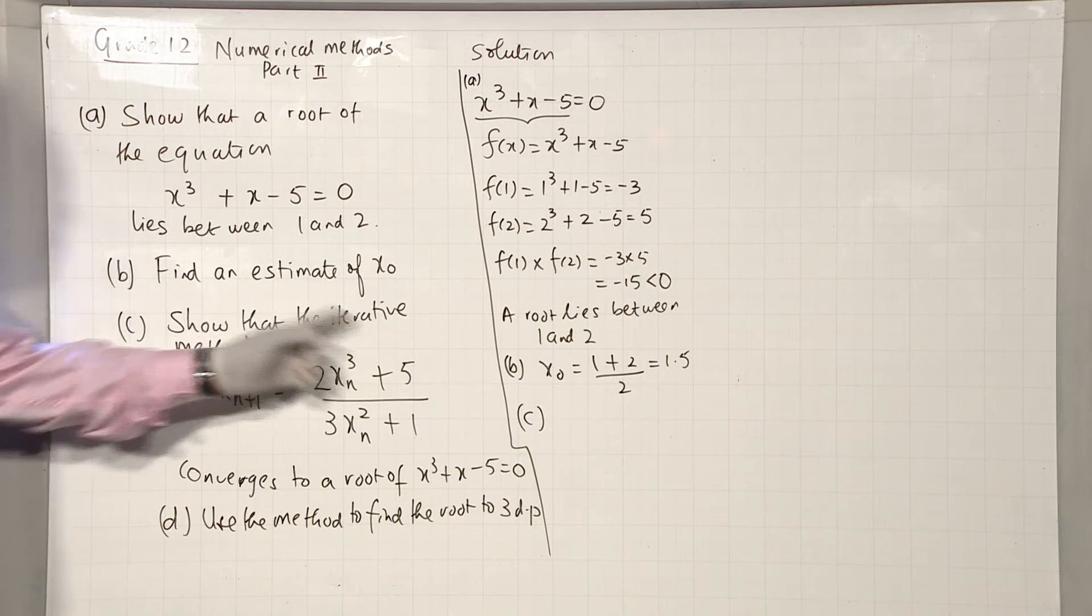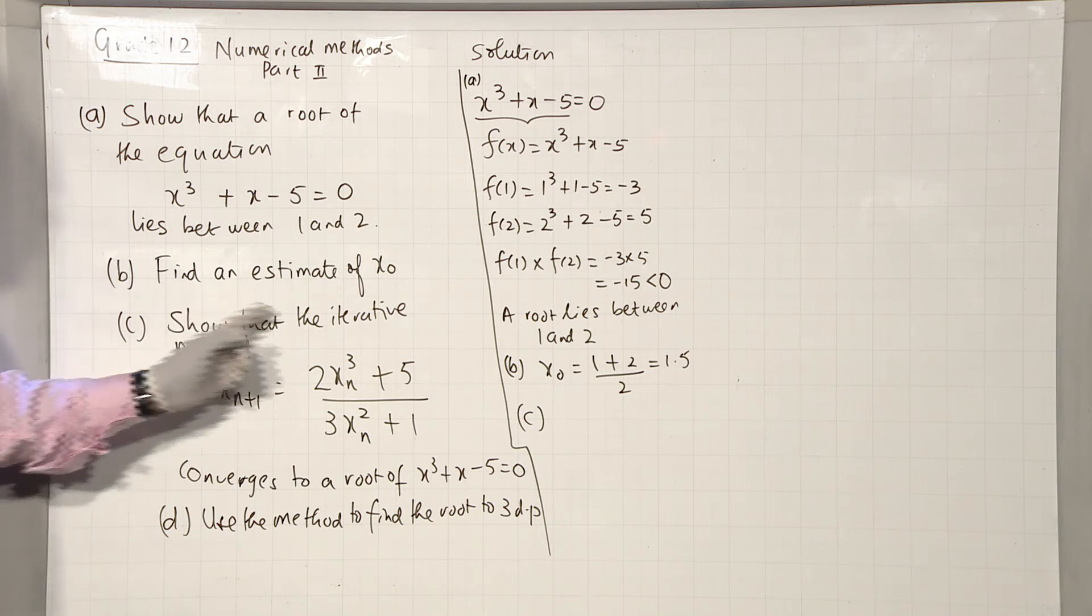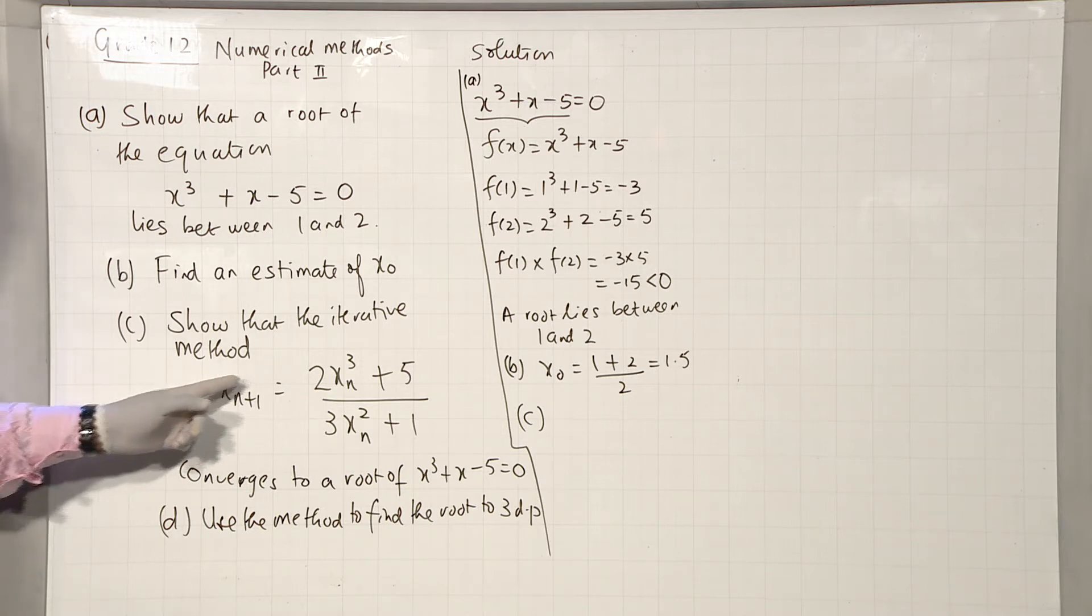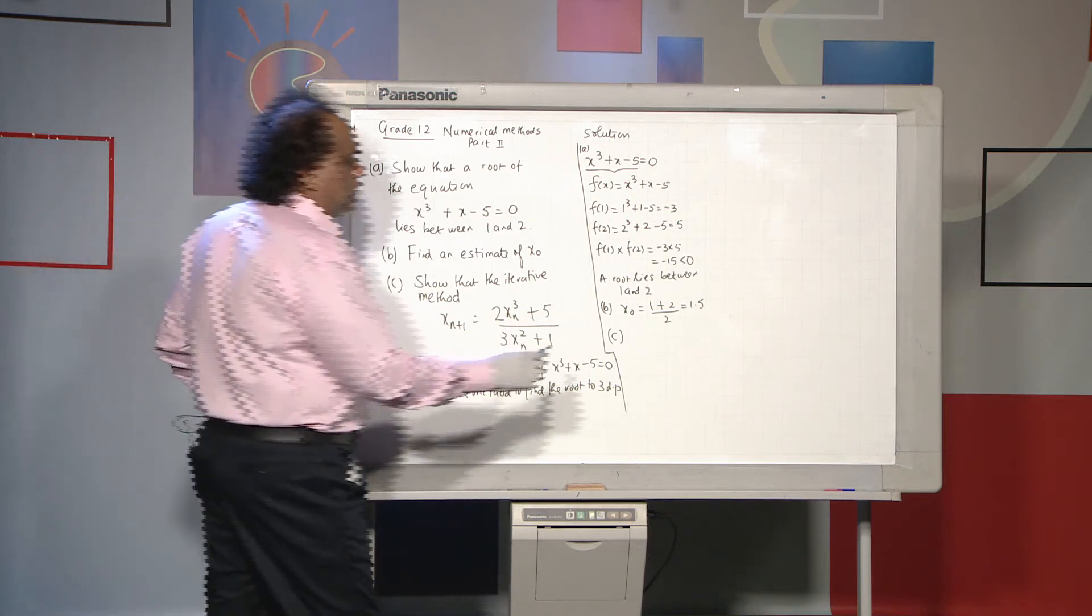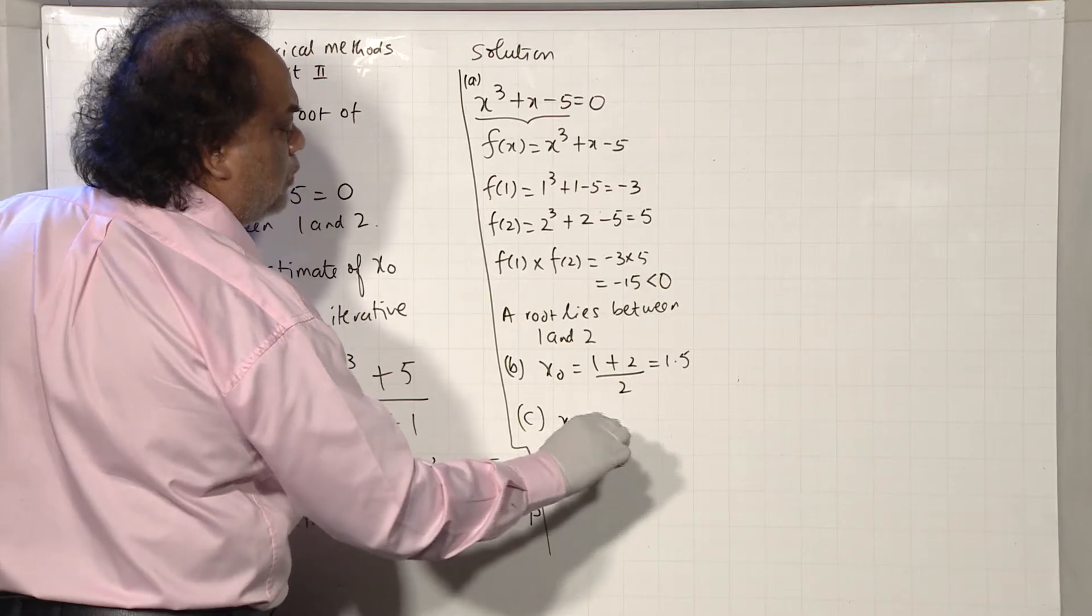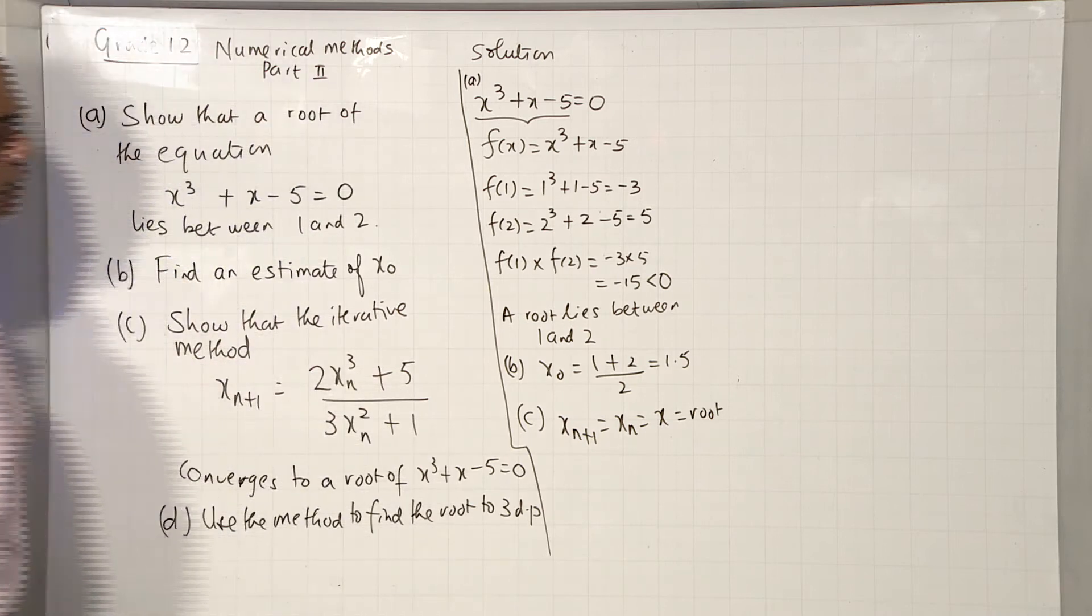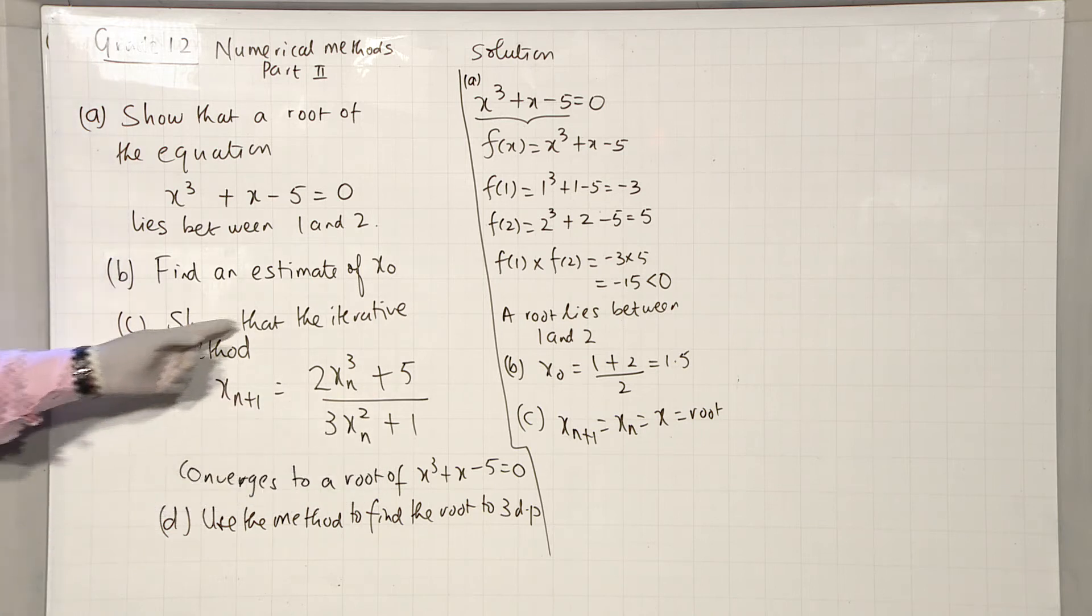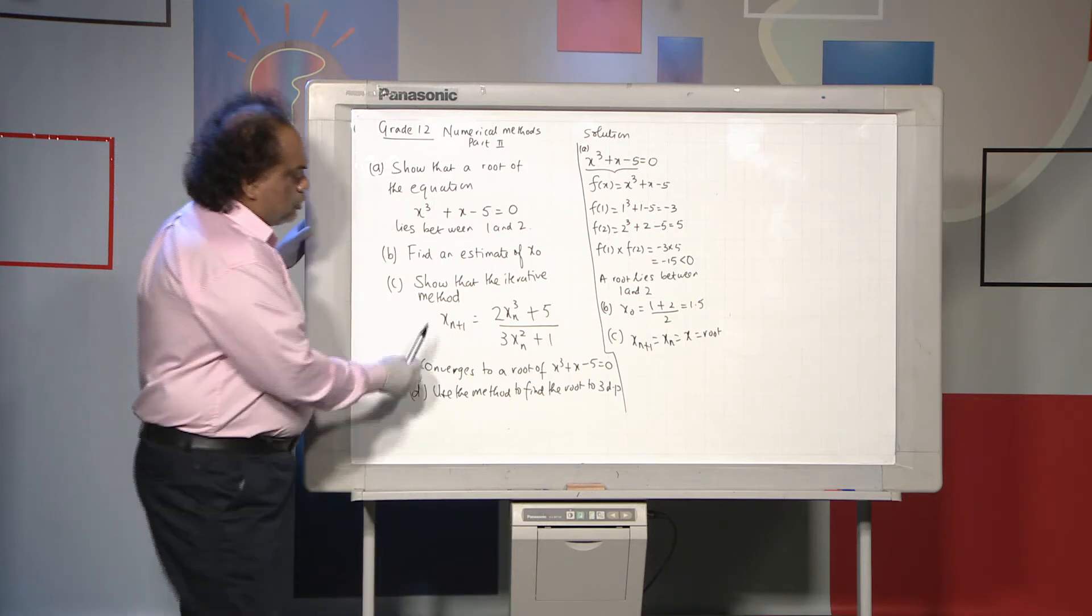Now here, the iterative method has already been given. You remember in part 1, we said, how does an iterative method look like? You have only one x on the left-hand side, and all the terms in x are on the right-hand side. If the method converges, that is, it produces the root, what happens? There is absolutely no difference between the iterates and x, which is root. At convergence, this is what should happen.